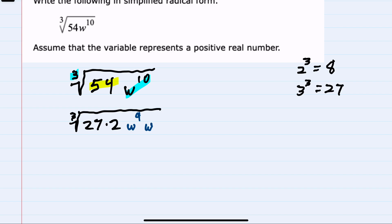Rewriting the expression this way allows me to see that this 27, being a perfect cube, has a cubed root of 3. So the 27 can come outside of the radical as just a 3, leaving the 2 under the radical.